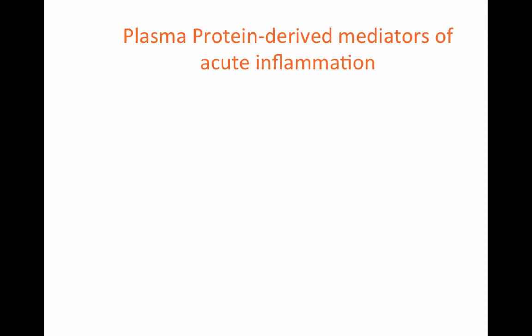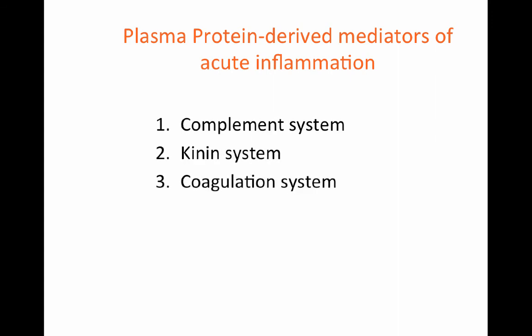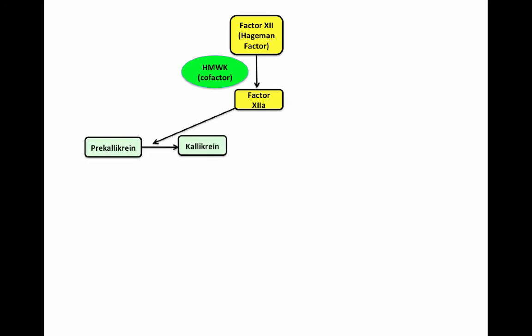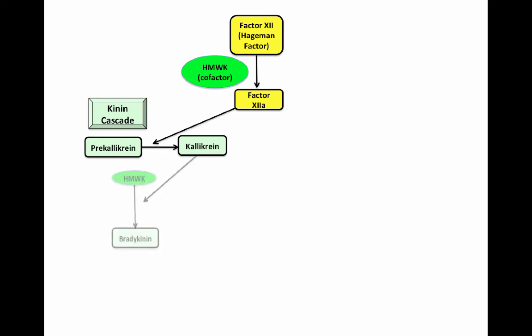Plasma protein-derived mediators of acute inflammation include the complement system, the kinin system, the coagulation system, and the fibrinolytic system. Factor XII, or Hageman factor, is the initiating factor in the generation of these plasma protein-derived mediators. Factor XII interacts with high-molecular weight kininogen to generate Factor XIIa. Factor XIIa will initiate the kinin cascade by activating prekallikrein into kallikrein.